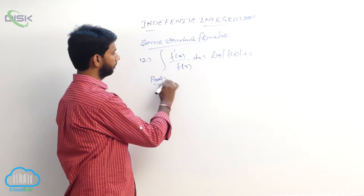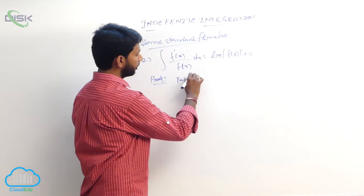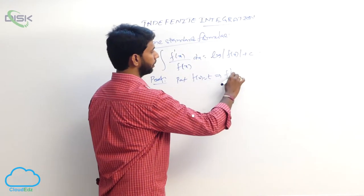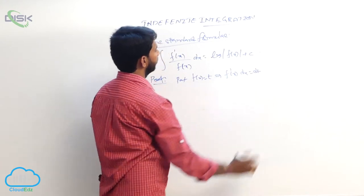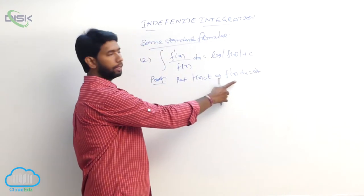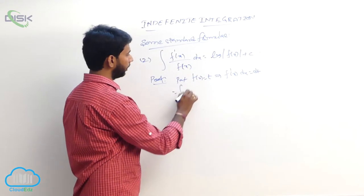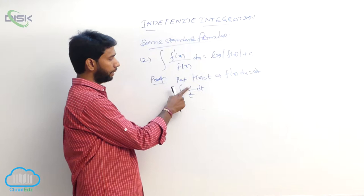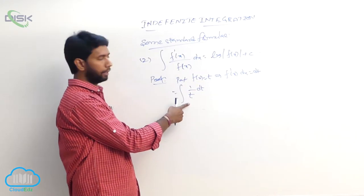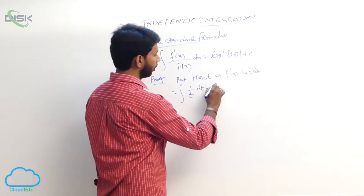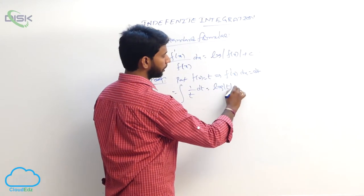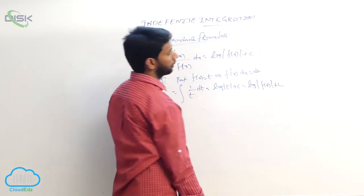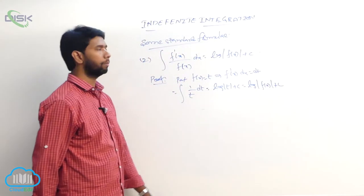Proof: put f(x) equal to t, differentiate to get f'(x) dx equals dt. The integral becomes integral of (1/t) dt, which is of the form integral of 1/x. Thus it equals log|t| plus constant, which equals log|f(x)| plus constant.